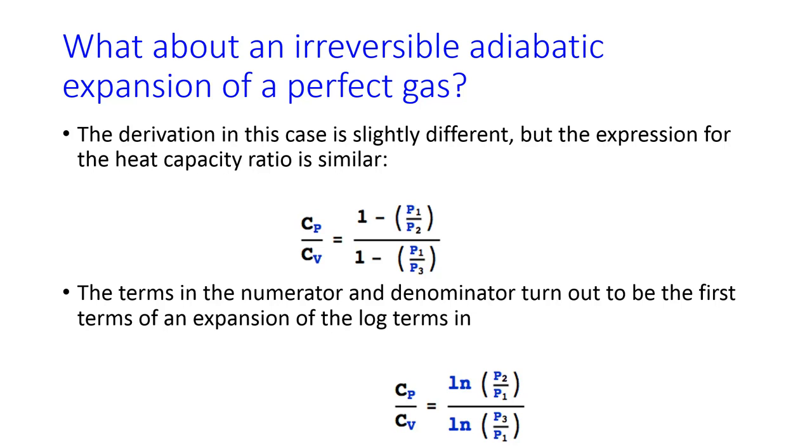When you do your experiment and collect your pressures, you're going to calculate Cp over Cv using both assumptions, irreversible adiabatic expansion and reversible adiabatic expansion. And you're going to see which one more appropriately models your data.